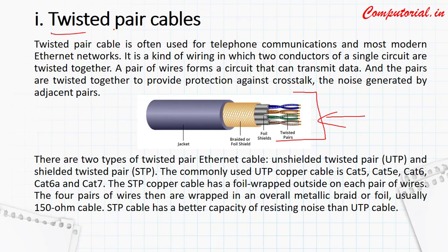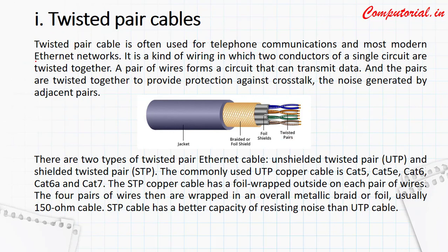Twisted pair cable is often used for telephone communication — it was introduced by Alexander Graham Bell. The most modern Ethernet networks generally use these cables. It is a kind of wiring in which two conductors of a single circuit are twisted together, forming a twisted pair through which multiple bits can easily travel. Pairs of wires are twisted together to provide protection against cross-talk.